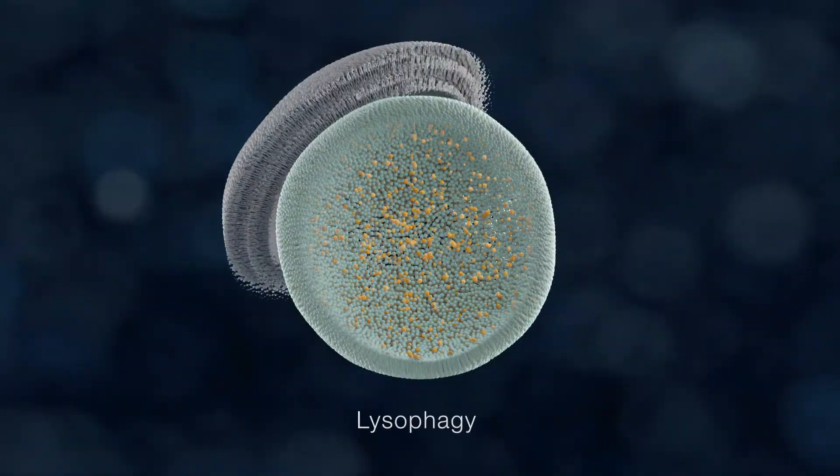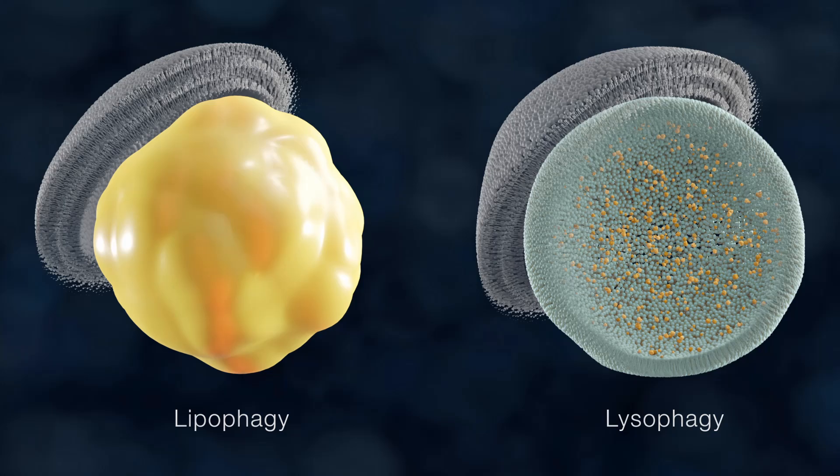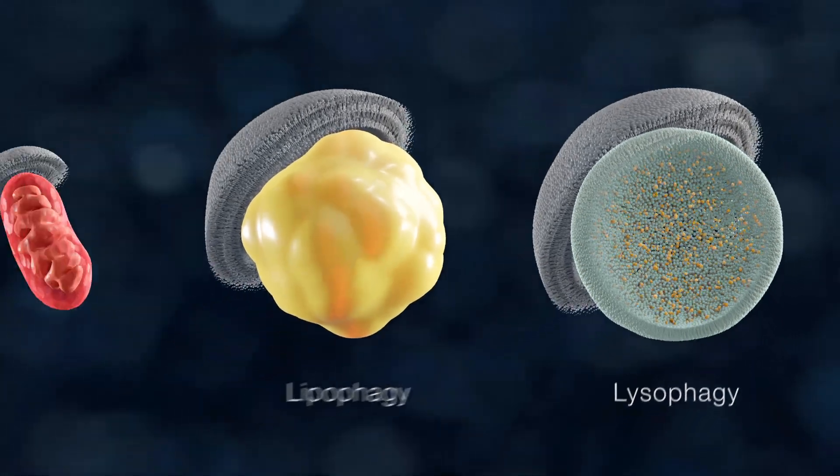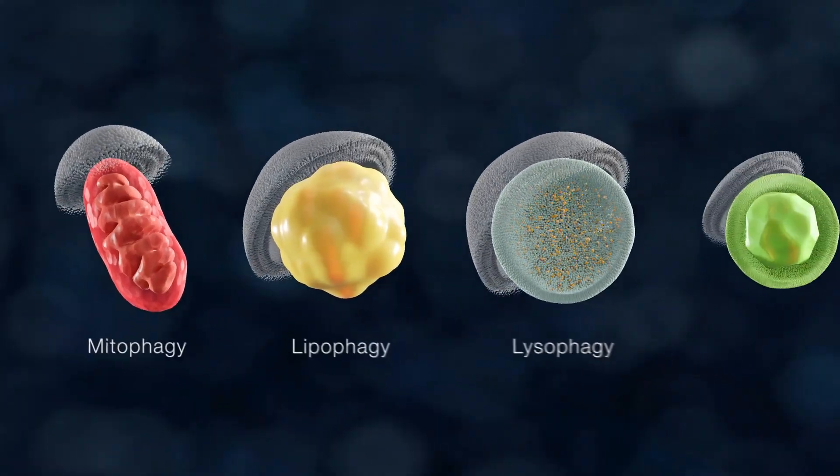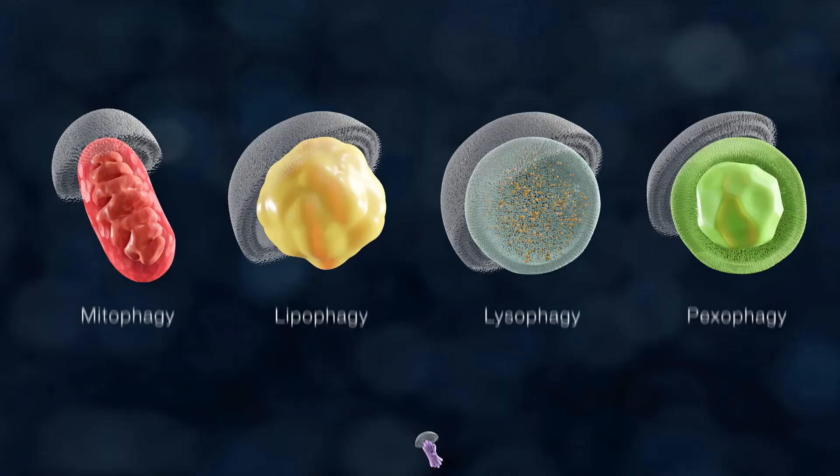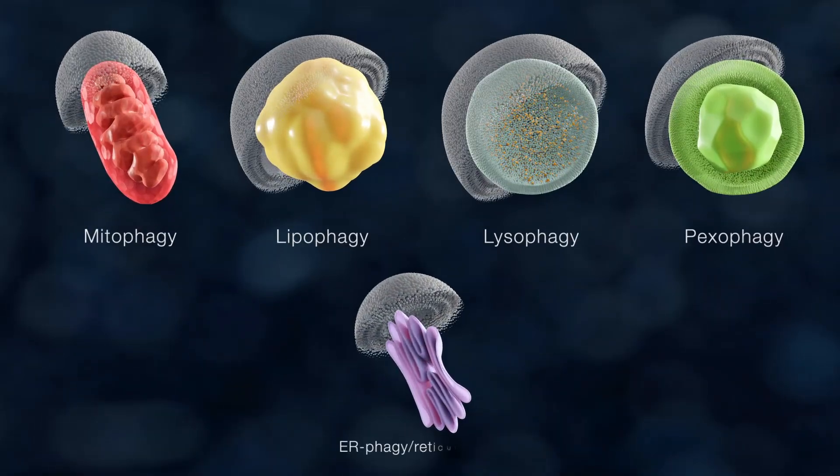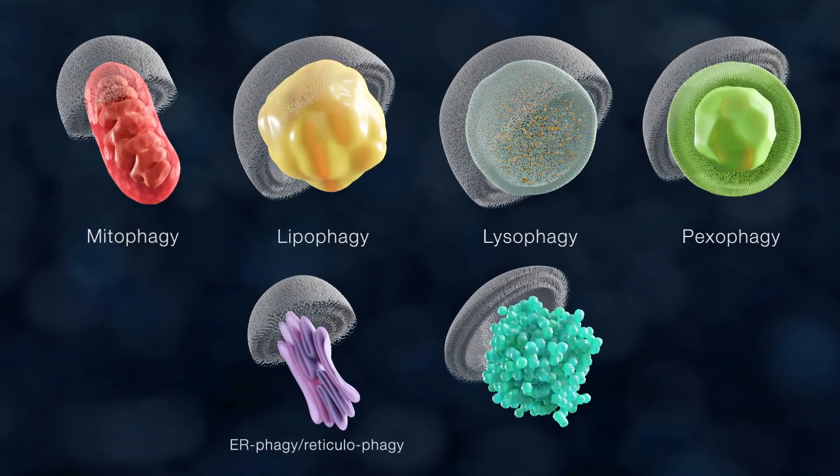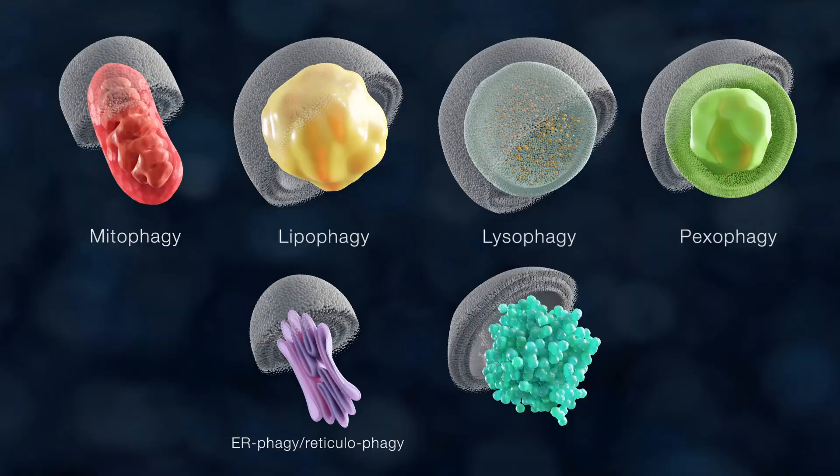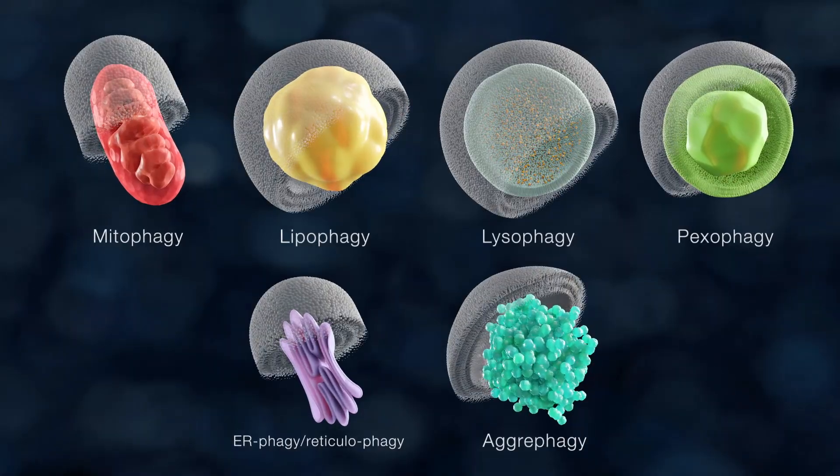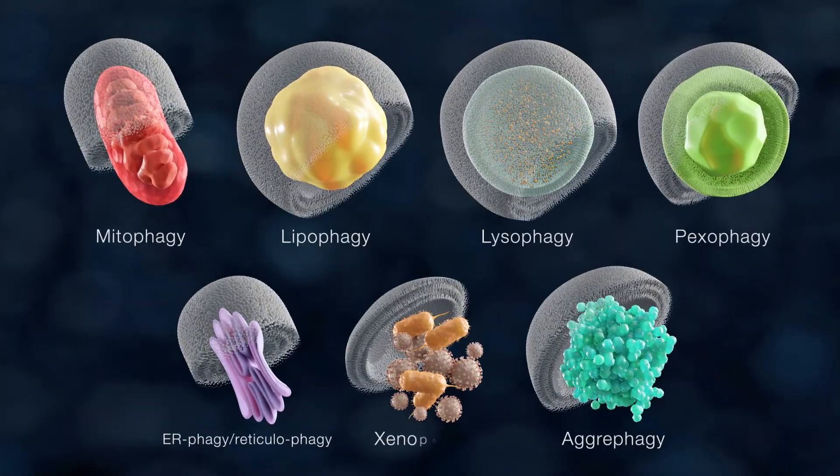Selective autophagy is involved in the regulated turnover of portions of organelles including mitochondria (mitophagy), peroxisomes (pexophagy), and the endoplasmic reticulum (ER-phagy), but also large protein RNA complexes such as protein aggregates (aggrephagy) and pathogens (xenophagy).